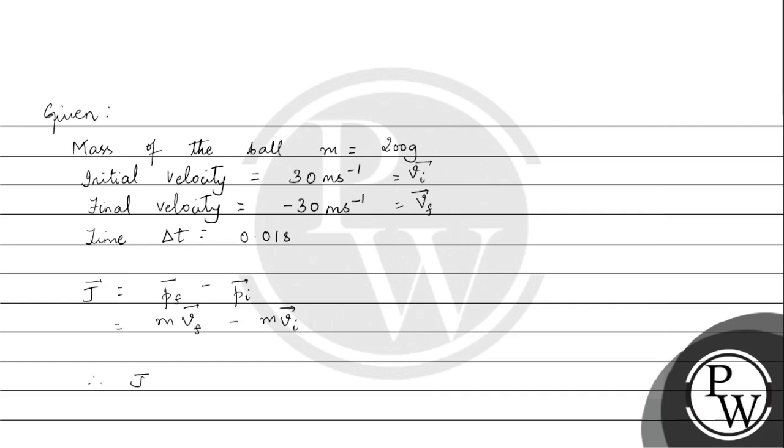So therefore, J is, mass is 200 grams, which is 200 into 10 to the power of minus 3 kg, into minus 30 and minus 30 again. So therefore, impulse is 200 into minus 60 into 10 to the power of minus 3.